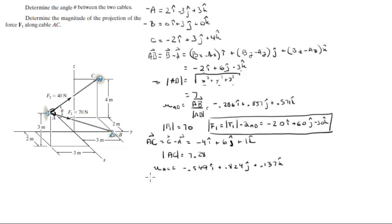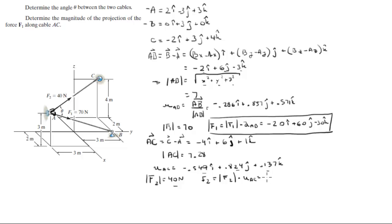You know that the magnitude of F2 is equal to 40 newtons, so the Cartesian vector form of F2 is found by multiplying the magnitude of F2 times the unit vector it acts along. Multiplying those values by the magnitude gives you the Cartesian vector form, which comes out to be negative 22i plus 33j plus 5.5k.